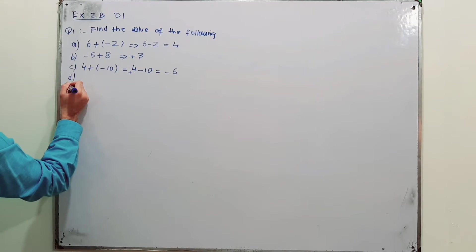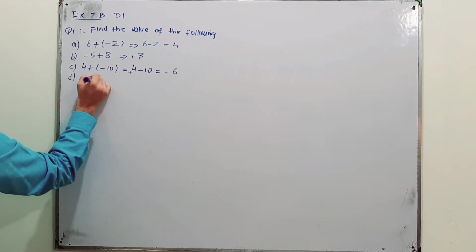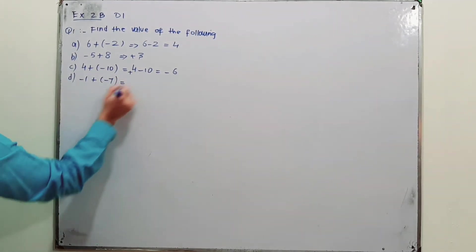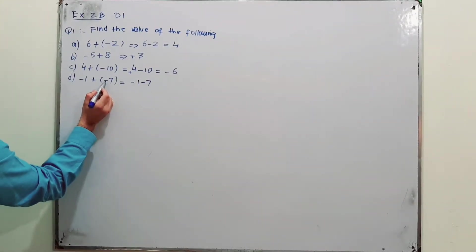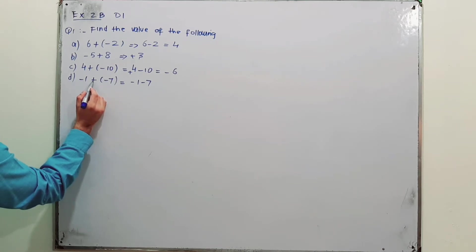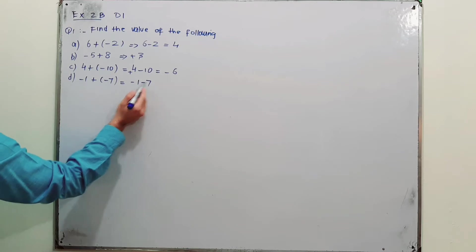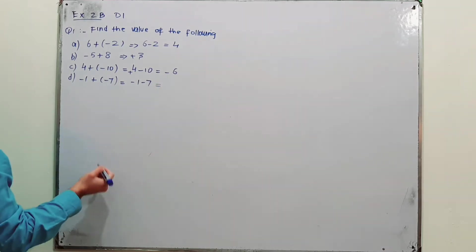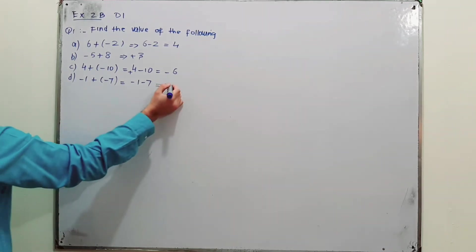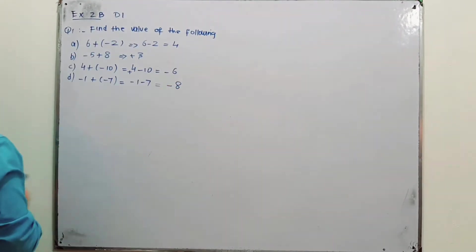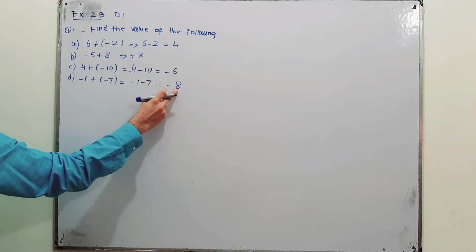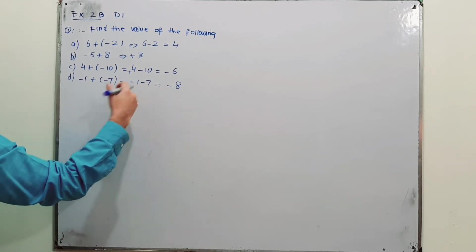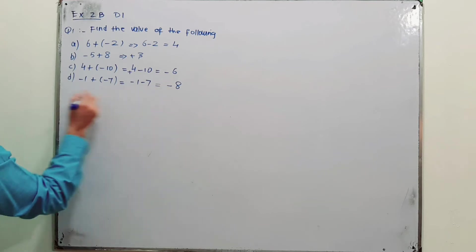Part D: minus 1 plus (minus 7). Open the brackets — the minus inside overcomes the plus outside, giving minus 1 minus 7. When the signs are the same, we add the numbers but retain the negative sign, giving minus 8.